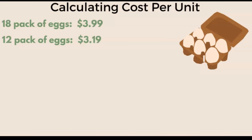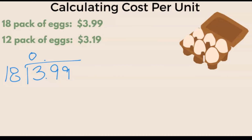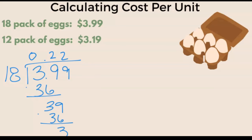For the 18-pack of eggs, we're going to say: what is $3.99 divided by 18 eggs? We put our decimal here. 18 does not go into 3, so we put our 0. Then 18 goes into 39 two times, and 2 times 18 is 36, giving us 3. Bring down the 9 — same thing, 2. 2 times 18 is 36, and we have 3. We can stop there — two digits. So that tells us each egg in the 18-pack costs 22 cents.